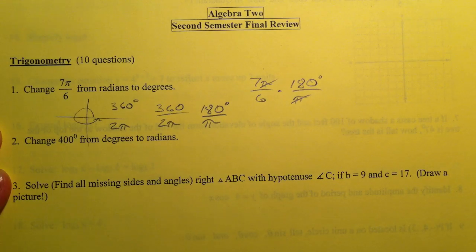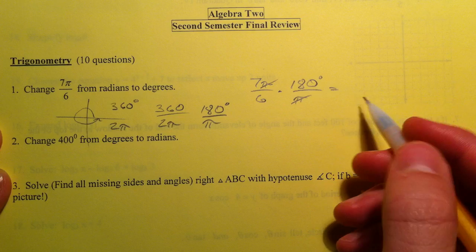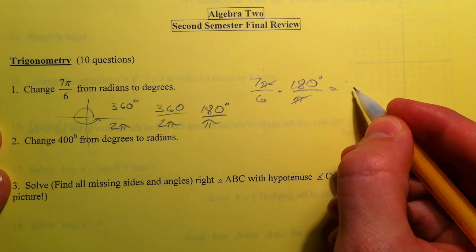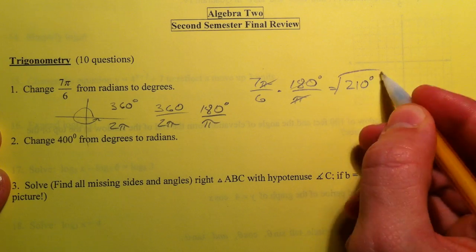And so when you do that, the radians cross out as if they were a unit. 180 divided by 6 is 30, and then 7 times 30 is 210 degrees.